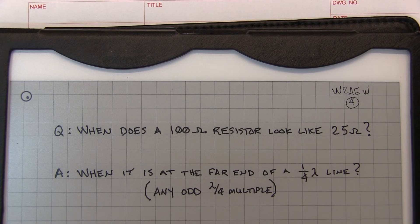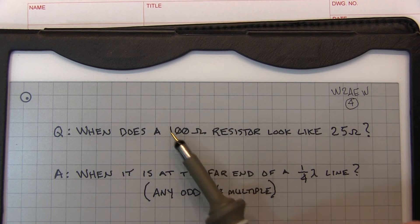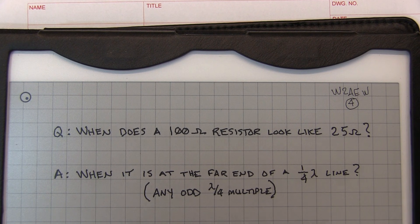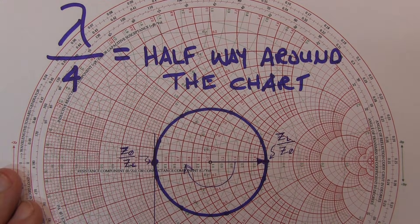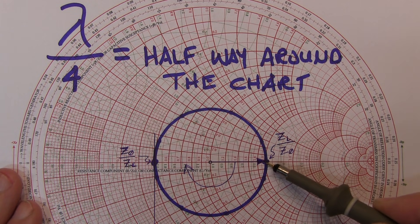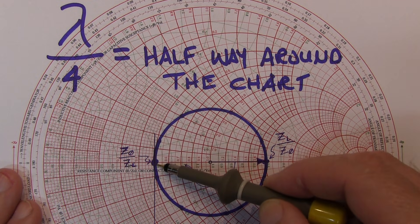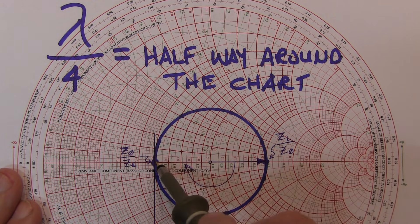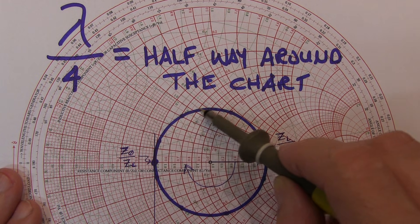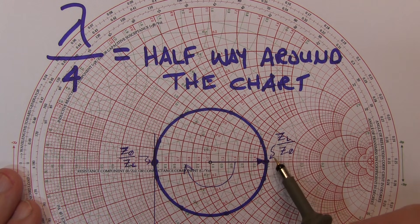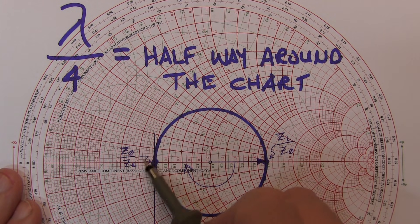This leads to an interesting question: when does a 100-ohm resistor look like a 25-ohm resistor? The answer is when it's at the far end of a quarter-wavelength line or any odd quarter-wavelength multiple. So here's that situation illustrated on the Smith chart. Here's where a 100-ohm resistor would get plotted. If we draw the circle, go halfway around the Smith chart, which is a quarter-wavelength long, we're now at the 25-ohm position. Another halfway around, another quarter-wavelength, we're back out to the 100-ohm position.